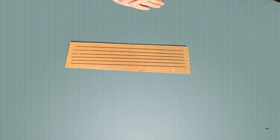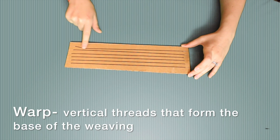Our next step is to string the warp threads of the loom. The warp threads are the vertical threads that form the base of the weaving.